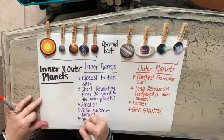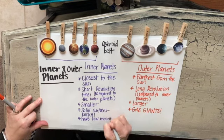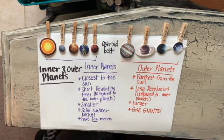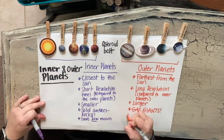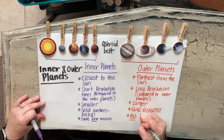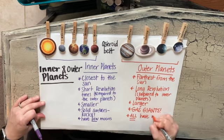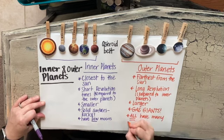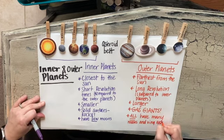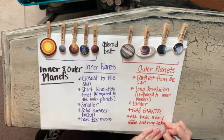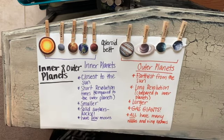The inner planets have few moons. On Earth we have one moon, and Mercury and Venus don't even have a moon — Mars has two. But the outer planets all have many moons and ring systems.